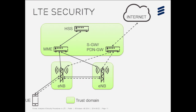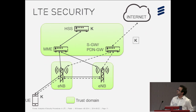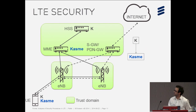LTE relies on different keys depending on the procedures and the agents involved, organized in a specific key hierarchy. At the root of this hierarchy is the master key, stored in the SIM card, provided by the operator, and shared between the user equipment and the HSS node. When the user equipment attaches to the network, a procedure derives another key called the KASME key, shared between the user equipment and the MME node, and used to derive other keys to activate security for the NAS protocol.